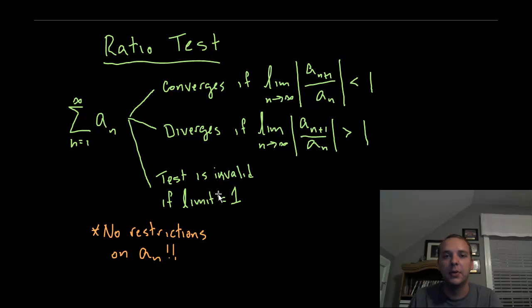The reason I said this is the most versatile is there's no restrictions on a sub n. For a lot of the other tests that we use, the a sub n either has to be positive or has to be decreasing or has to be monotonic or has to be this side or the other. The ratio test is very versatile.